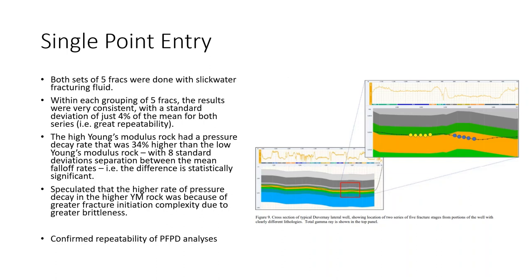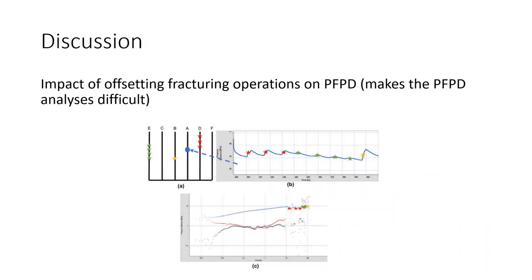There are a couple of discussion points the paper mentioned. The impact of offsetting frack operations on PFPD makes the analysis difficult, with poor elastic stress responses that reduce the time of fall-off data that can actually be analyzed. There's also a correlation between PFPD and microseismic activity that isn't well understood according to the paper, but there is a strong correlation between the number of microseismic events and the decline of the decay seen from the MDH plot. This might suggest greater fracture complexity due to shear failure that is detectable with microseismic.